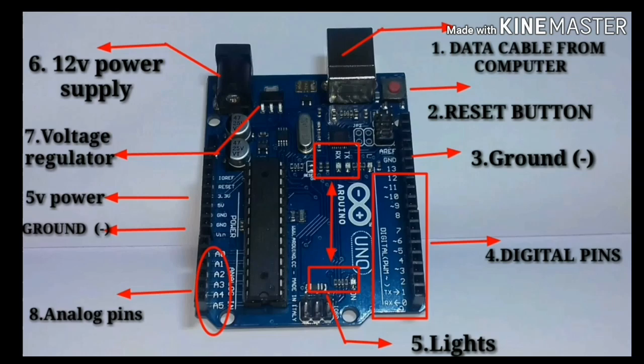The third component is the ground — this is the negative terminal. The fourth is the digital pins. The digital pins operate at 0V or 5V. That is either 0V or 5V — that's why we use digital pins.